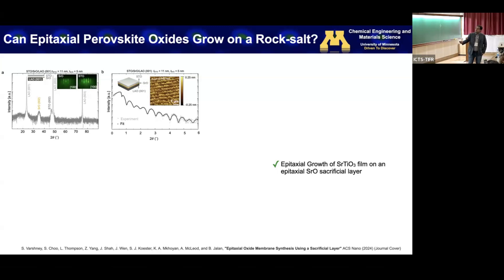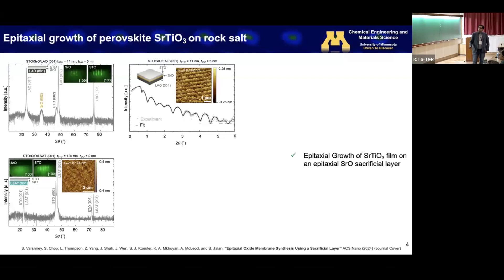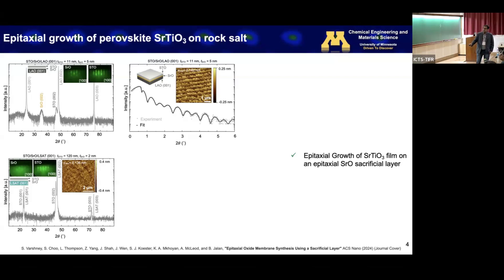We also grew films on a different substrate, LSAT, using just 2 nm of strontium oxide — barely 2 nm. Once again, we can make a phase-pure single crystalline epitaxial strontium titanate film on strontium oxide grown on LSAT. The film is atomically smooth with an RMS roughness of 0.2 nm.